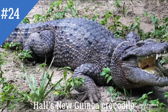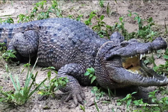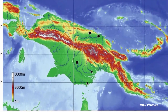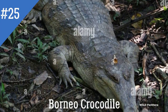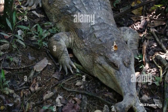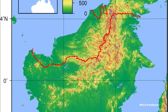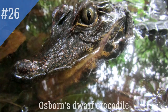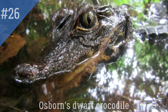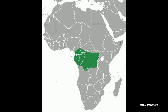23. Hall's New Guinea Crocodile — Crocodylus halli is a newly discovered crocodilian species found in swamps and rivers of New Guinea. 24. Borneo Crocodile — Crocodylus raninus is an enigmatic species of freshwater crocodile, endemic to the Southeast Asian island of Borneo. 25. Osborne's Dwarf Crocodile — Osteolaemus osborni is a species of crocodile endemic to the Congo Basin in Africa.